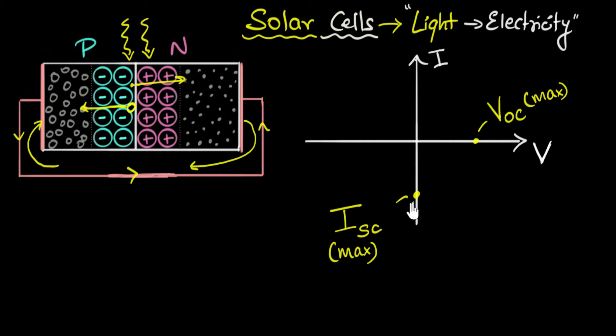Now let's think about what happens in between. The graph has to go from the open-circuit point to the short-circuit point. To get an intermediate case, we put in some resistance in between — open circuit is infinite resistance, short circuit is zero resistance. Let's put in a very tiny resistance. What's going to happen?